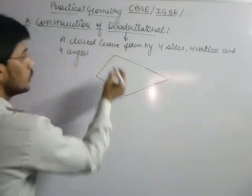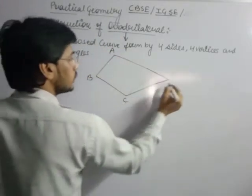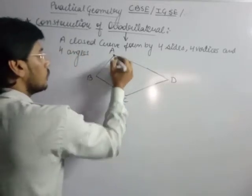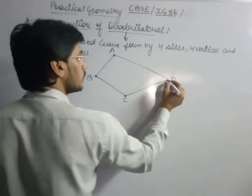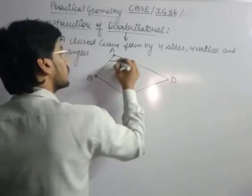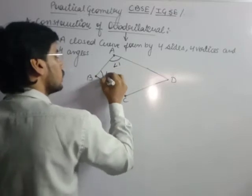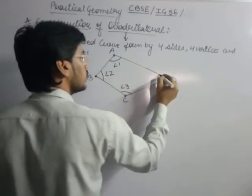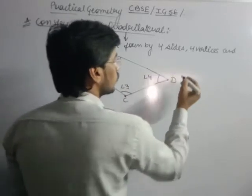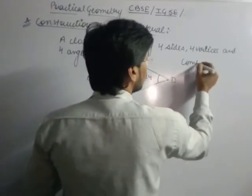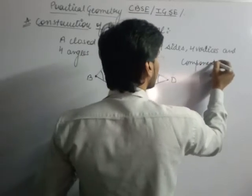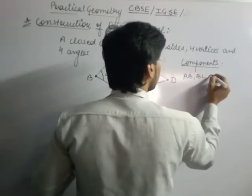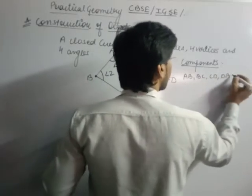This is a quadrilateral. You can label it as A, B, C, and D. These are the vertices of the quadrilateral. The sides of the quadrilateral are AB, BC, CD, and DA.